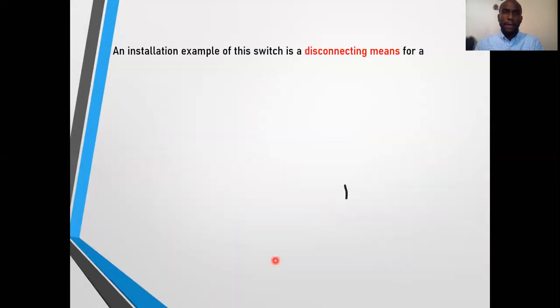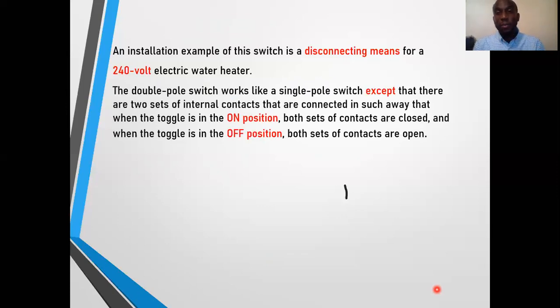Let's look at some important facts about the double-pole switch, for example, how is it used. It is used as a disconnecting means for a 240-volt electric water heater. Now, the electric water heater can range in current values from 20 amperes to even 30, even 50 amperes, depending on its application and its size. So if you want to have a disconnecting means by which you are able to control this water heater from the location of the water heater and don't have to worry about going to a breaker panel to disconnect it, you can use a double-pole switch.